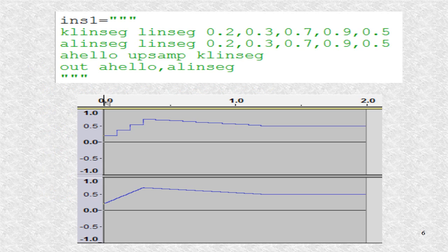This is an example of an instrument string using the LINSEG opcode. Even though we have 5 inputs, this is really 3 X, Y points since the initial value of X of 0 is assumed. Thus the signal starts at 0.2, and after 0.3 seconds is at 0.7. After 0.9 seconds, it is at 0.5. Actually, it is not X, Y, but change in X, Y.